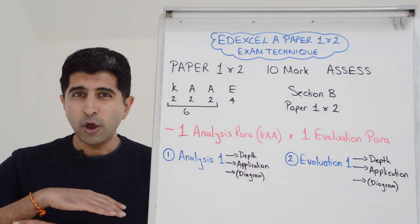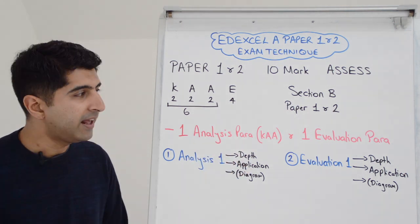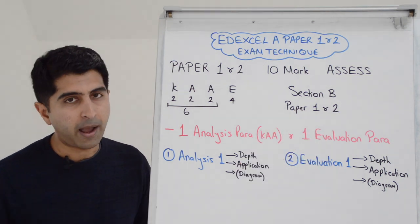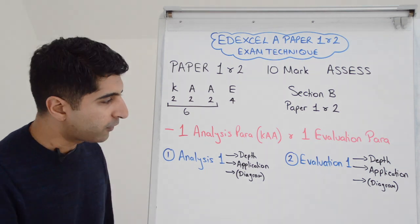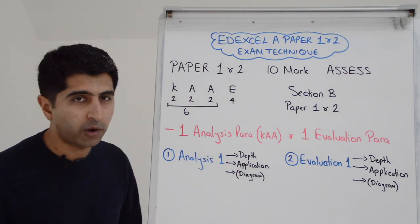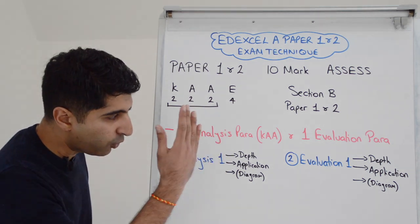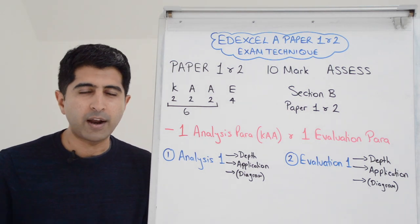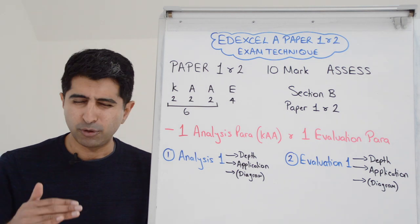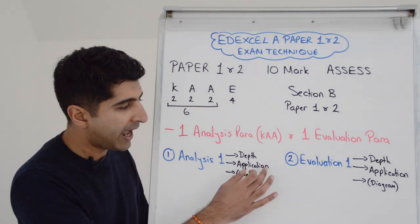So one analysis paragraph will be absolutely fine as long as you write that in depth. One evaluation paragraph written in depth would absolutely suffice and that will get you your full mark. So when it comes to your two paragraphs, your first one is your analysis paragraph. Now, of course, you're looking to write in full depth, whatever point you're making or policy that you're writing. You're writing about it in proper depth. You're developing the idea in as much detail as you possibly can.